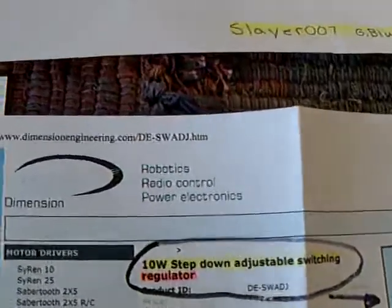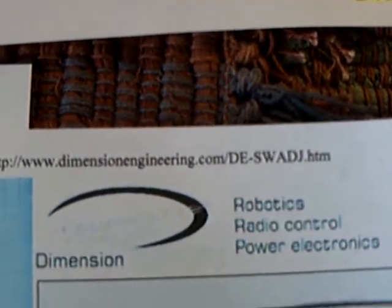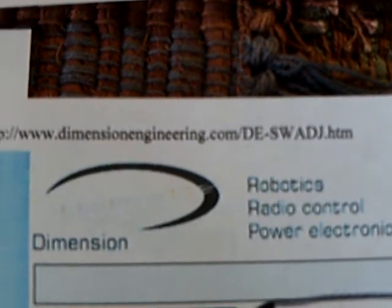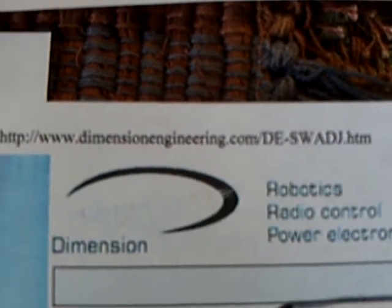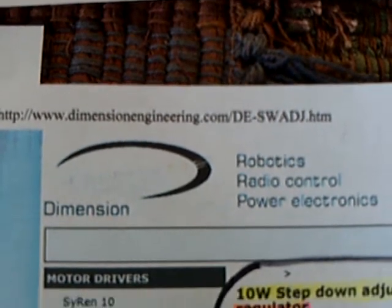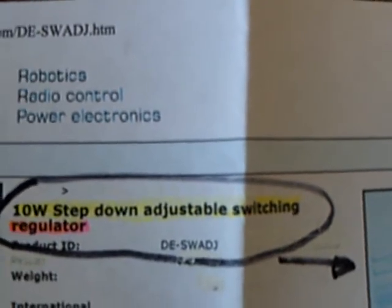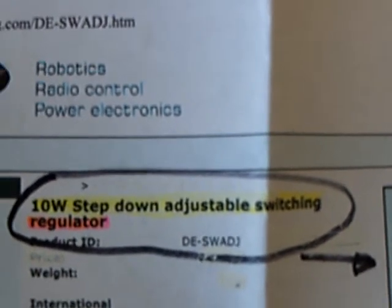But anyway, this switching regulator, I found it at Dimension Engineering Online. I bought this online, it was a $15 item. Mark Hale and I have been using this for a number of months on the Bedini projects, and it's called a Step Down Adjustable Switching Regulator, and this is why I'm using it: it is 90% efficient.